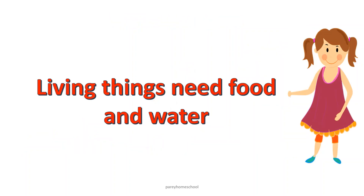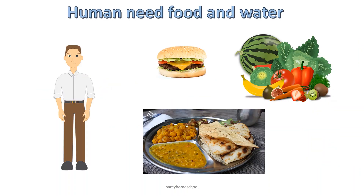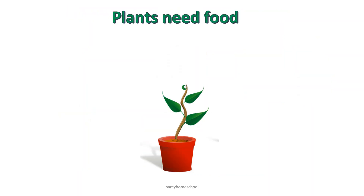Living things need food and water. Humans need food and water for their survival — they need different kinds of food. Plants also need food, but they do not take food from anyone else. They can produce their food themselves. To prepare their food, plants need water and sunlight. With the help of water and sunlight, plants make their food.